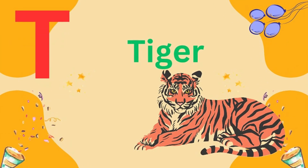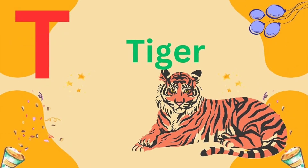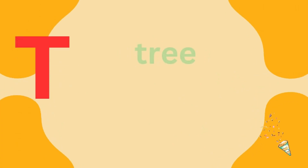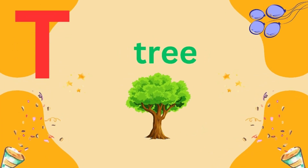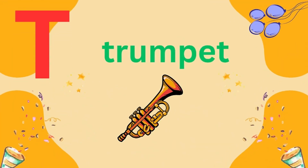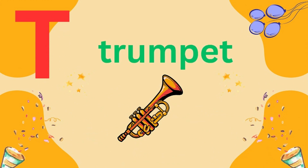T is for tiger. D is for tree. D is for train. D is for trumpet.